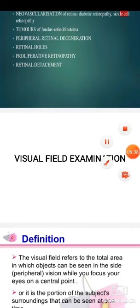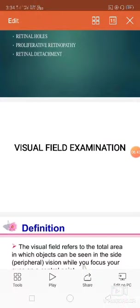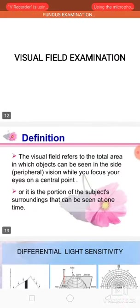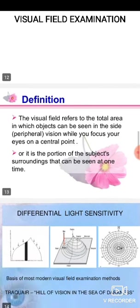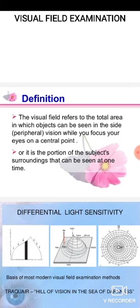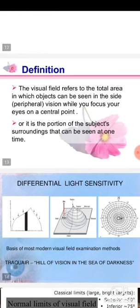Then we will discuss the visual field examination. The visual field refers to the total area in which objects can be seen in the side or peripheral vision while you focus your eyes on a central point, or the portion of the subject's surroundings that can be seen at one time.